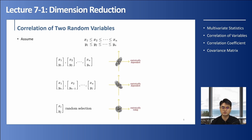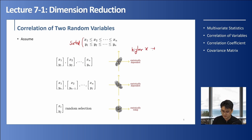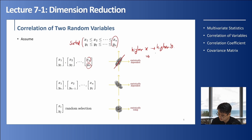Let's look at the meaning of correlation between two variables X and Y. Say both variables are sorted, so X1 is the smallest and Xn is the largest, and similarly for Y. If we pair the data as (X1, Y1), (X2, Y2), ..., (Xn, Yn), we can expect that higher X corresponds to higher Y. This gives a positive correlation, and we call this statistically dependent.